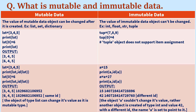But if you take a tuple (shown in the right column), which has values 7, 8, and 9, and you try to change the value at index number zero by assigning a different value, this will not be allowed because tuple is an immutable type of data, so it will not support item assignment or the changing of data in it.